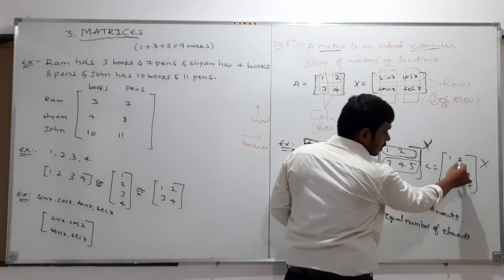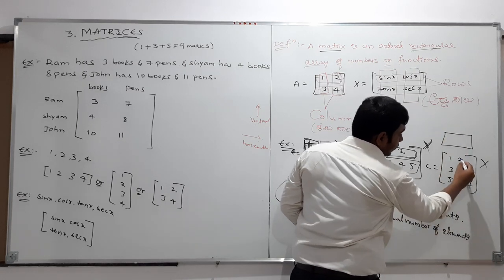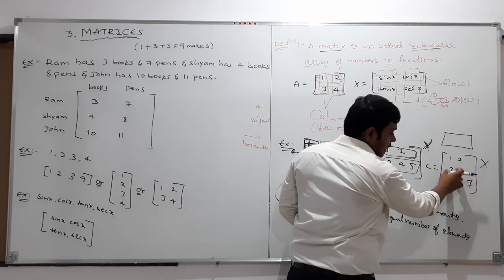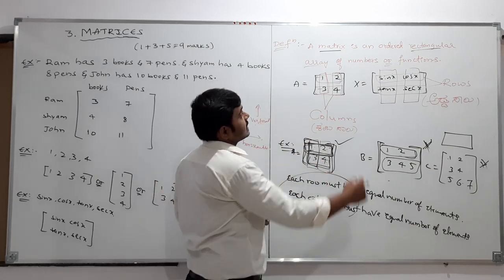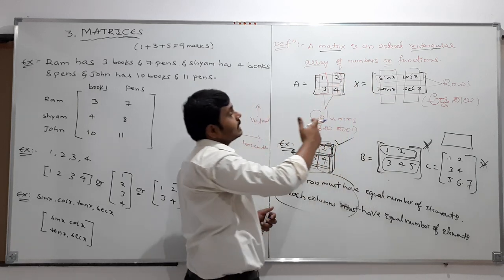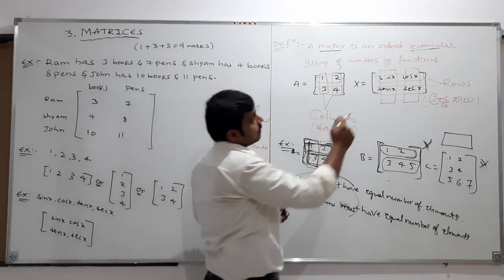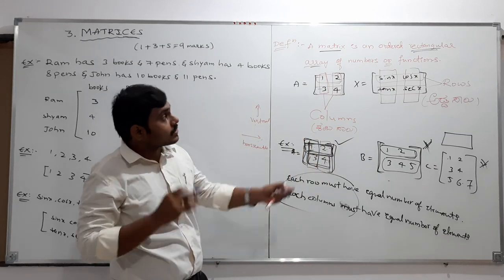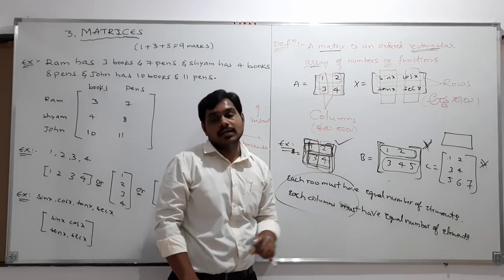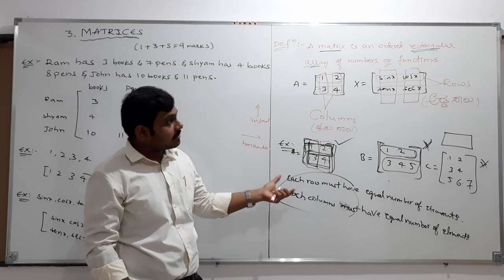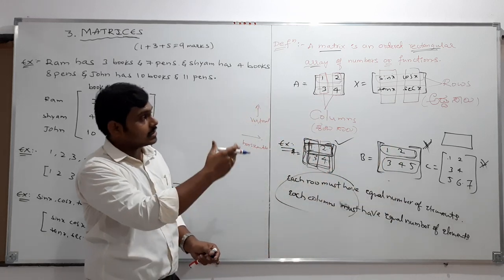So the definition is: a matrix is an ordered rectangular array of numbers or functions. Rectangular array means if the two conditions are satisfied, then obviously that arrangement will be in rectangular form. If not satisfied, for example [1, 2; 3, 4, 5], the first row has 2 elements and the second row has 3 elements — that is not a rectangular array. That is why we use the term 'rectangular array' in the definition. Array means arrangement.